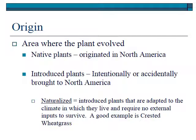Origin is where a plant evolved — where did it come from? If a plant originated in North America, we call it native. Introduced plants are those that were brought here from somewhere else, either intentionally or accidentally. They might have been brought intentionally as crops or ornamental plants, or accidentally as contaminants in seed, in ships, in crates, or even in the fur of animals.